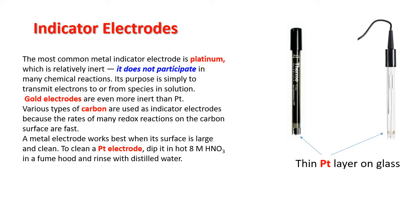Sometimes people use various types of carbon as indicator electrodes because rates of many redox reactions on carbon surfaces are fast. Metal electrodes work best when their surface is large and clean. On the right, there is a platinum electrode that is made by depositing a thin layer of platinum on glass surface. In this case, you do not need much platinum metal, but you have very large surface of electrode. This is exactly that type of electrode.